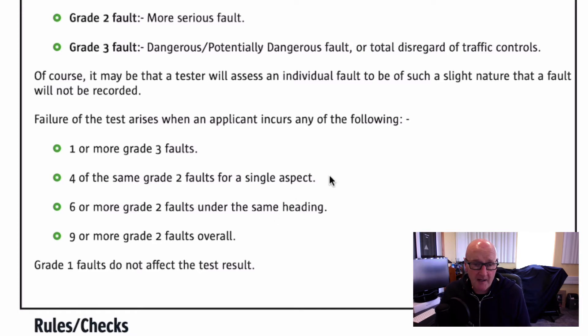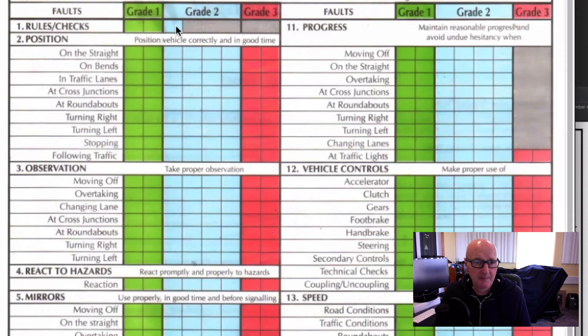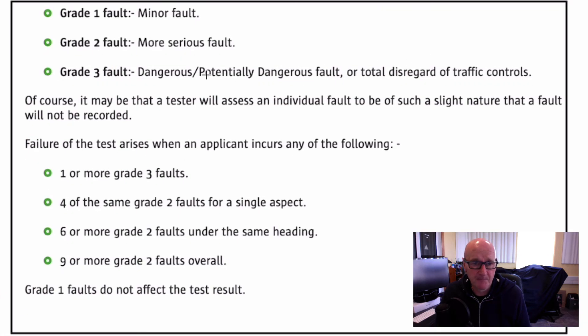Now let's move on. And we can have four or more of the same grade two area errors in the one area. Now I'm going to bring up the marking sheet just to let you see this. So the grade one is the green area. Grade two is this bluey area and grade three is the pink. We do not want to go into pink. So in grade two, if you go one, two, three, four, same error repeated, we'll say the top error here is position on the straight, you will fail if you repeat that error more than three times, four times you fail for that reason.